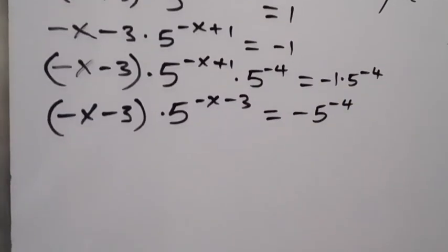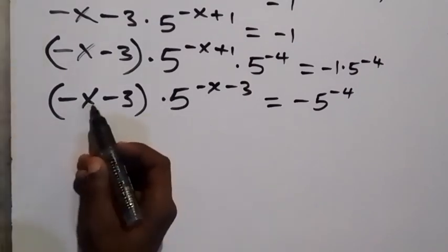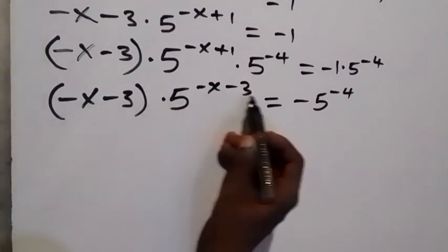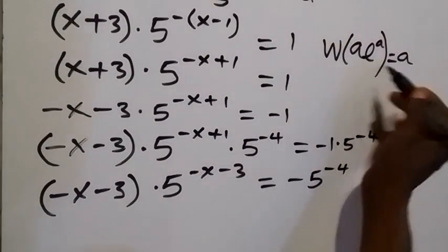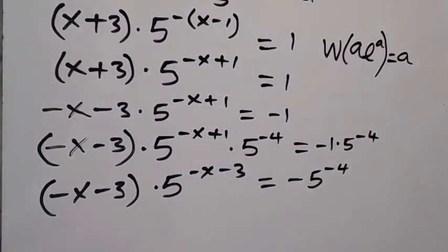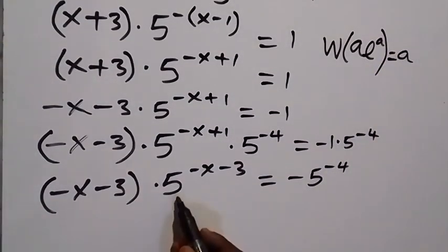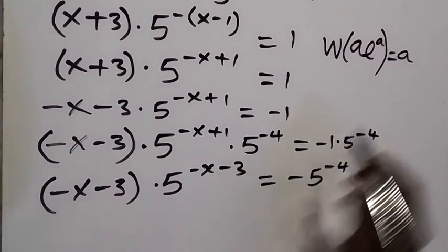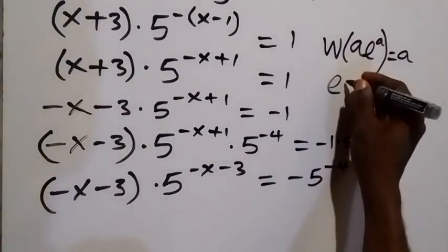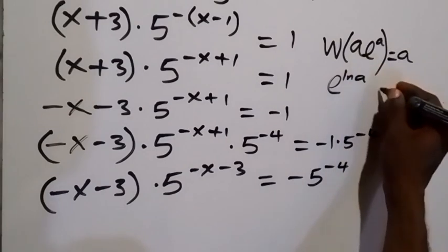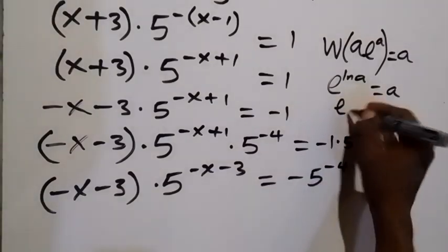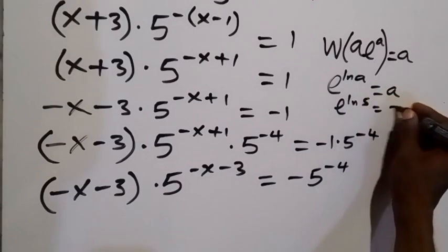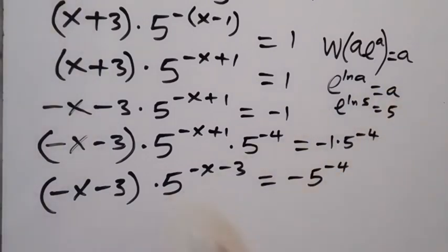From here we have minus x minus 3, and we have minus x minus 3 in the exponent as well. Now, from the W Lambert function, we need the form a times e^a. Let's change this 5 to have an exponential form. From the relationship: when we have e raised to power ln a, this equals a. So exponent ln a equals a. In the same way, we can write exponent ln 5 equals 5, so 5 can be written as e raised to power ln 5. Then writing this again: this becomes minus x minus 3 multiplied by e raised to power ln 5, multiplied by minus x minus 3, equals minus 5 raised to power minus 4.